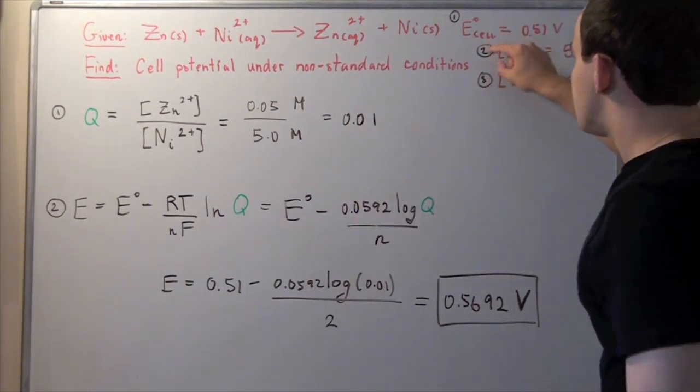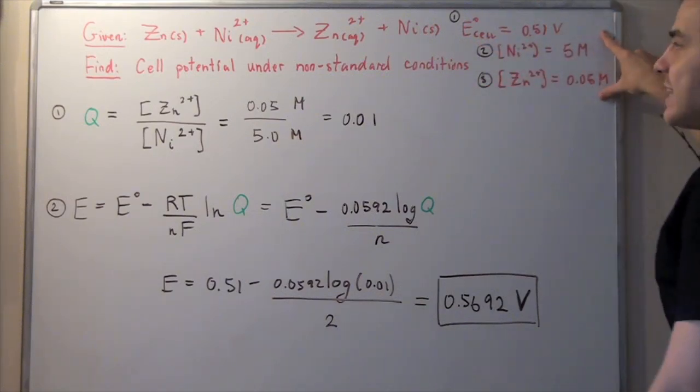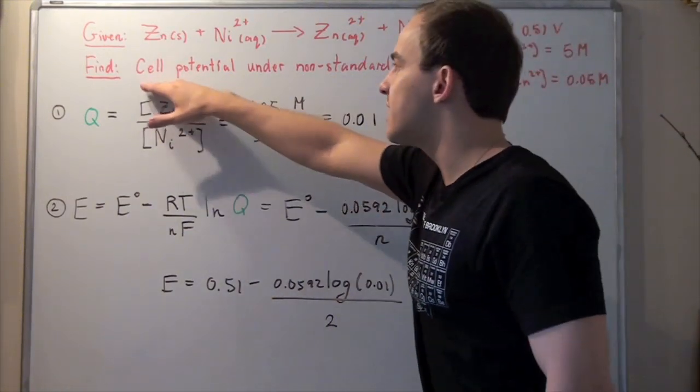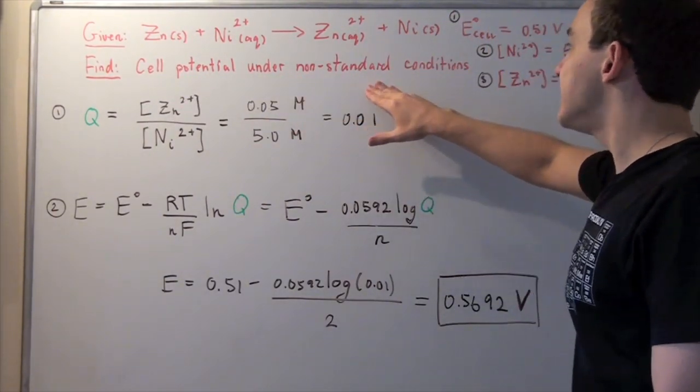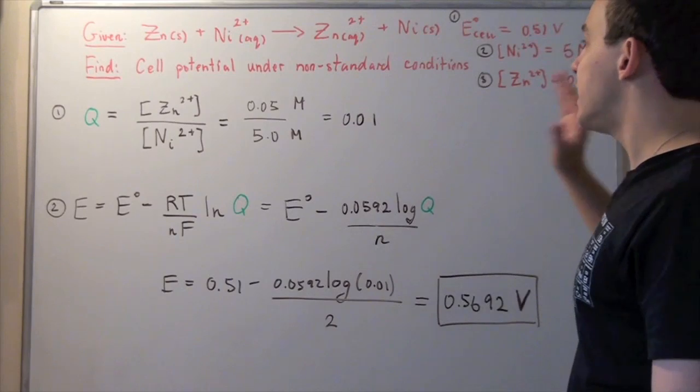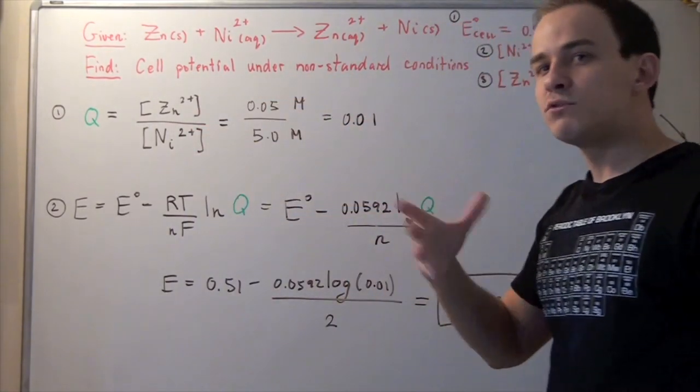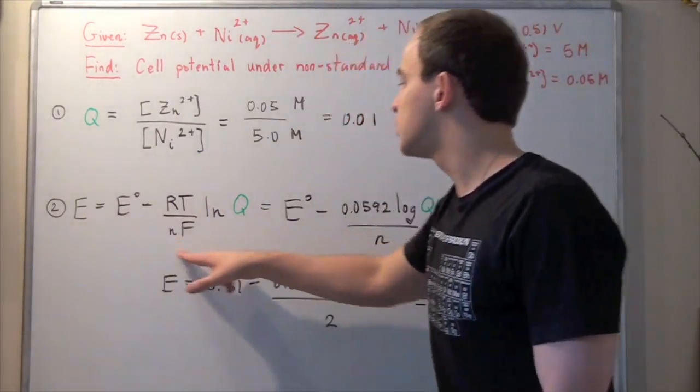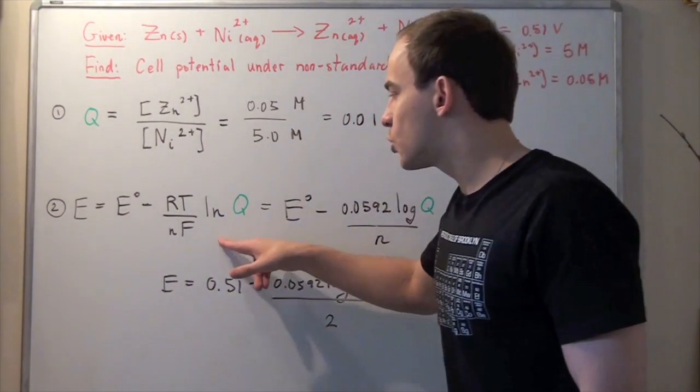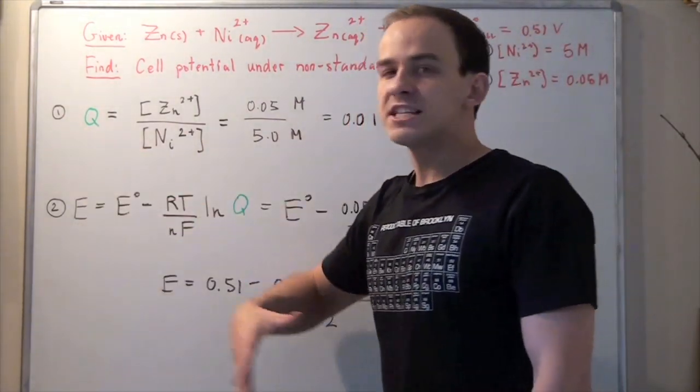Notice that these concentrations represent non-standard conditions. Our goal is to find the cell potential under these non-standard state conditions. Whenever we hear the word non-standard and cell potential, we have to think Nernst equation. But before we can use this equation, we have to find our Q.